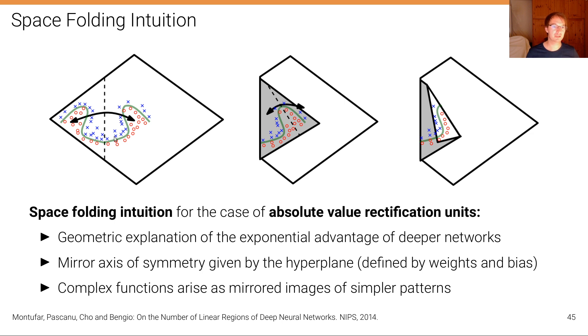And so complex functions like the green one here arise simply as the mirrored images of simpler functions. You can think of this as folding this sheet here multiple times, right? And you can see that we have multiple symmetries here, we have a symmetry at this axis, but then we have also additional symmetries here at this axis and at this axis, right? And so by folding this sheet of paper or space multiple times, we can very quickly with just a few layers, just by increasing the depth, adding some more layers, we can create very complex patterns for which we would need exponentially many neurons if we would want to keep the depth fixed and just increase the width of this hidden layer.